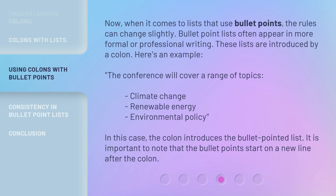When it comes to lists that use bullet points, the rules can change slightly. Bullet point lists often appear in more formal or professional writing. These lists are introduced by a colon. Here's an example: The conference will cover a range of topics: Climate change. Renewable energy. Environmental policy. The colon introduces the bullet-pointed list, and the bullet points start on a new line after the colon.